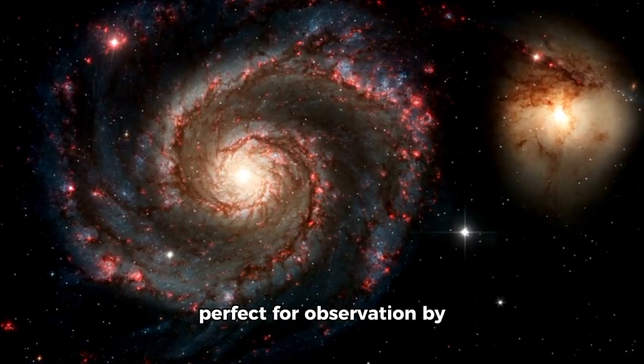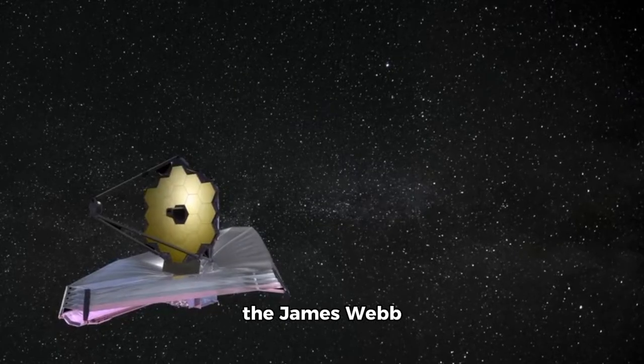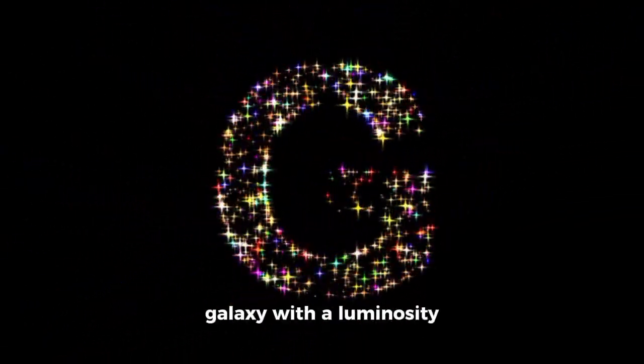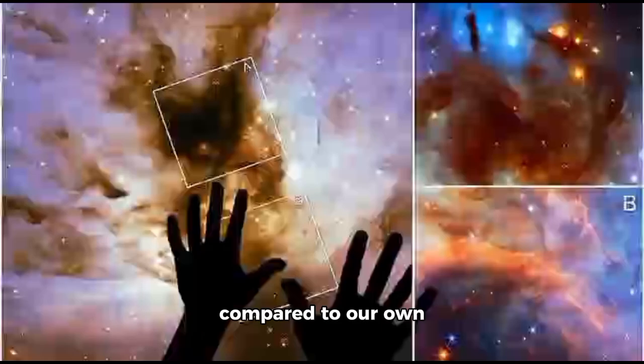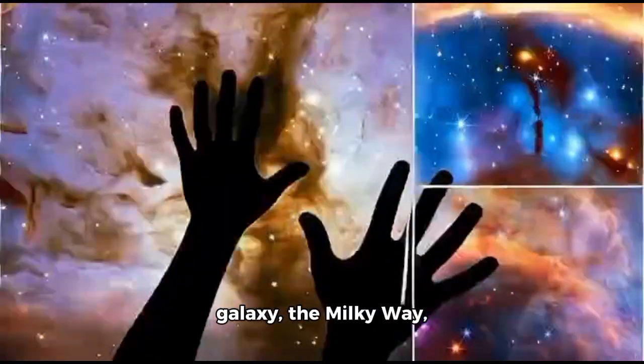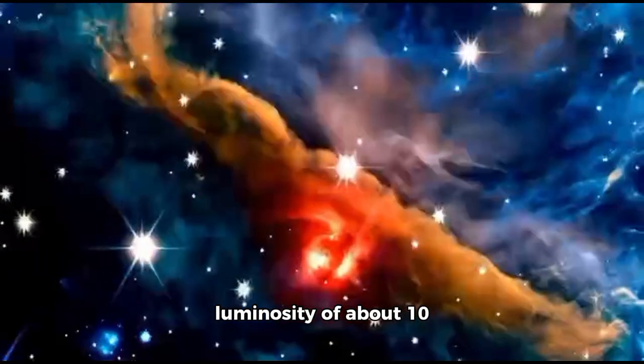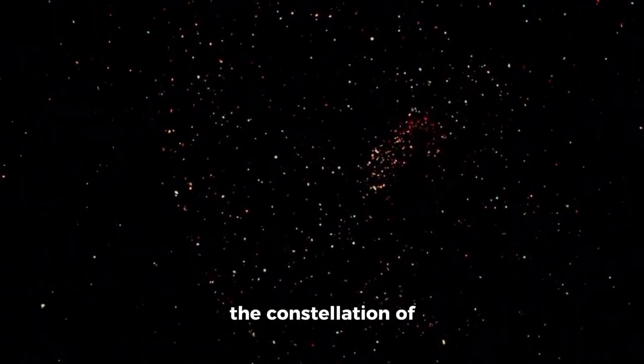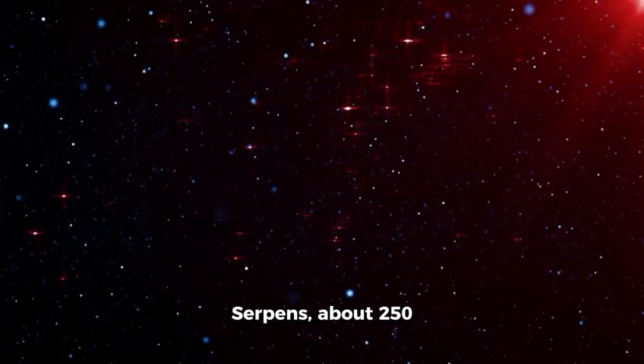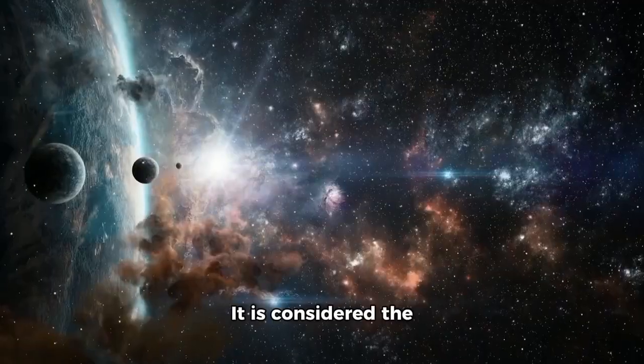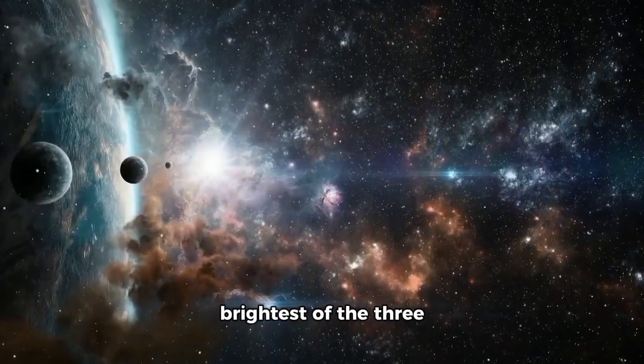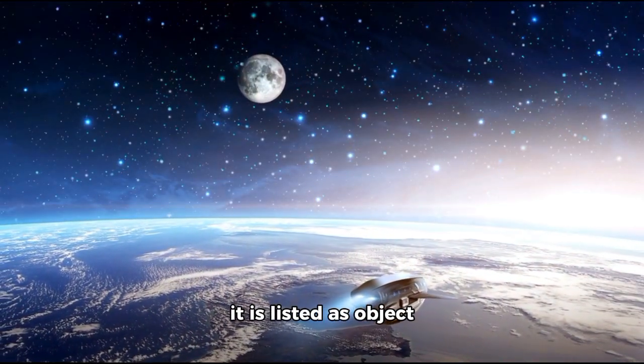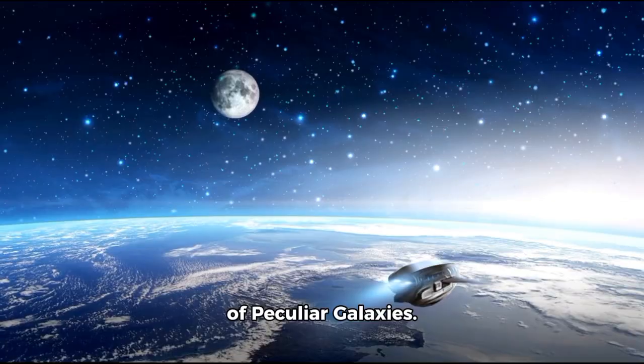This makes it perfect for observation by the James Webb Space Telescope. It is classified as an ultraluminous infrared galaxy with a luminosity of a trillion suns compared to our own galaxy, the Milky Way, which has a much lower luminosity of about 10 million suns. ARP-220 is located in the constellation of Serpens, about 250 million light years away. It is considered the brightest of the three closest galactic collisions to Earth, and it is listed as object number 220 in the Atlas of Peculiar Galaxies.